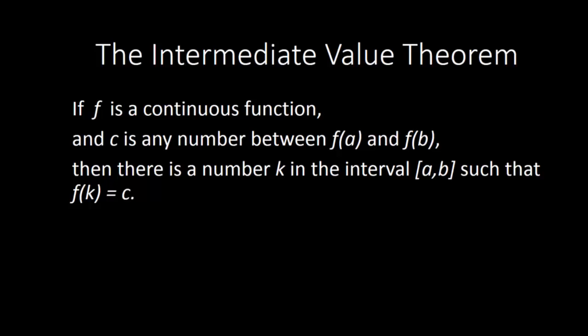So what we have here: we have x values a and b, and remember f of a and f of b represent y values. What the theorem is saying is, if we pick any y value between these two, we should be able to find an x value between a and b such that the y value is equal to c.